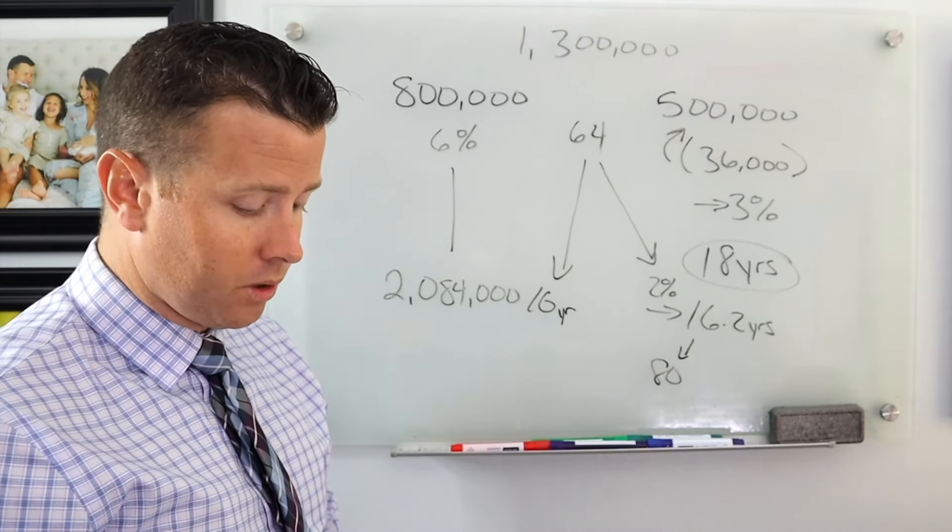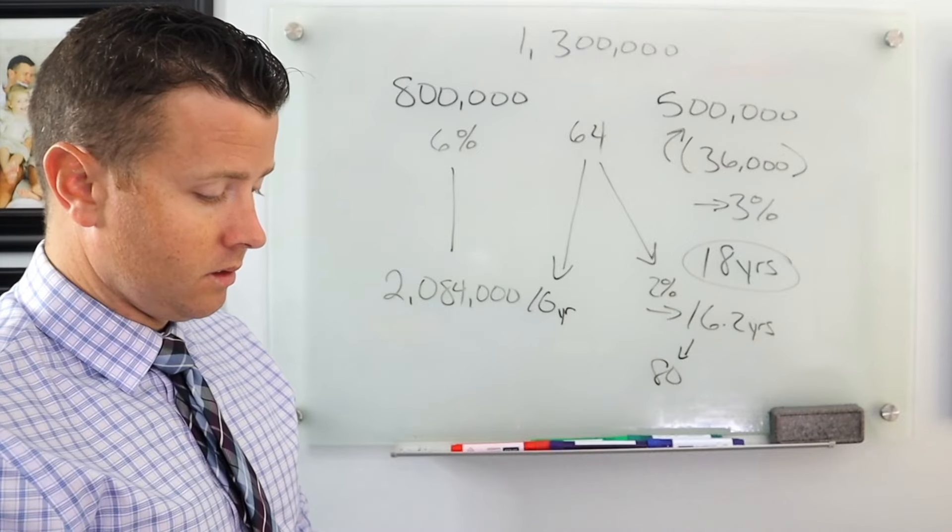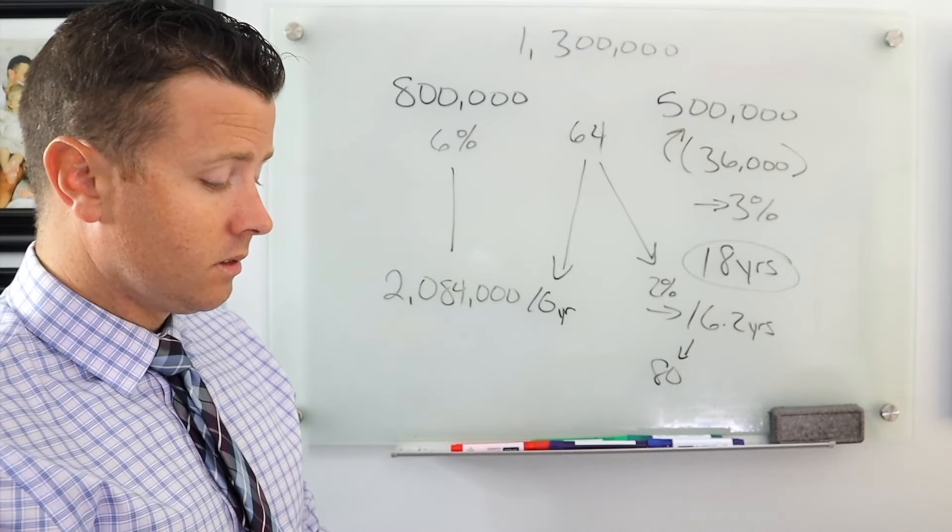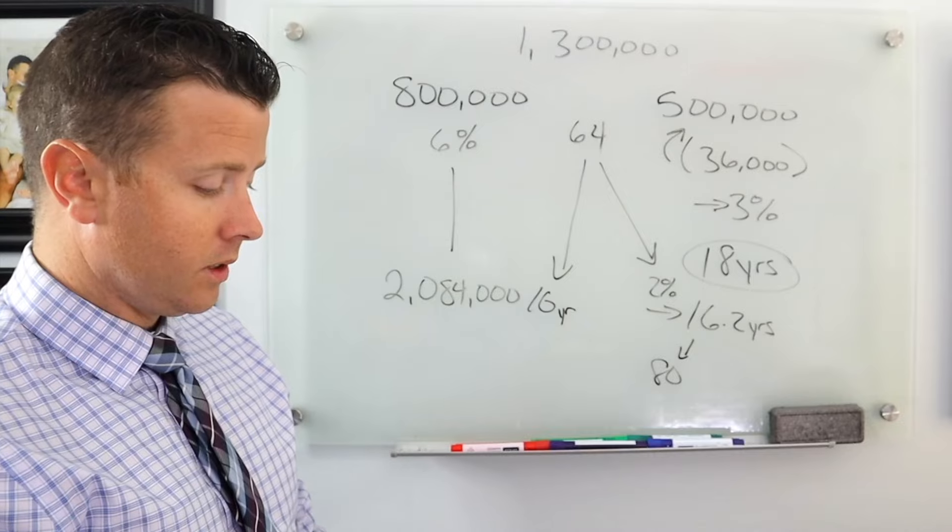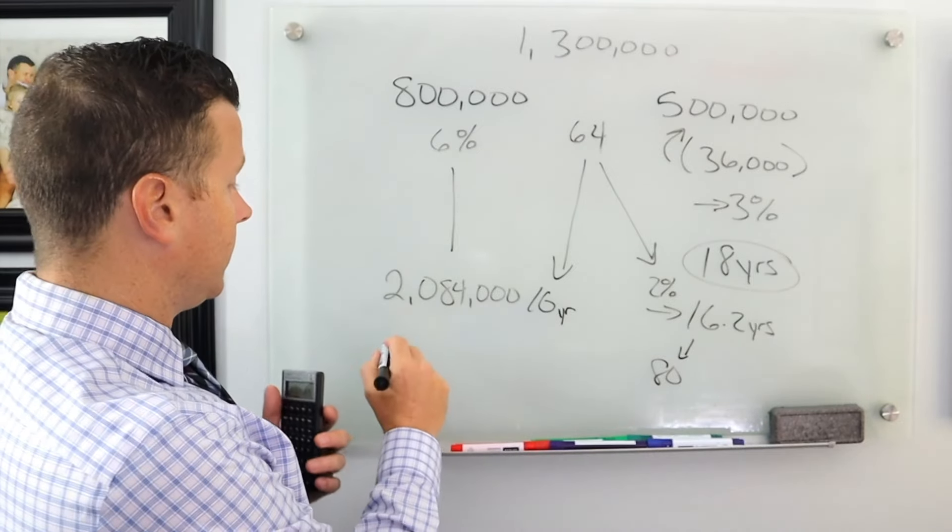Now let's say we just earned 4% a year. 4% a year, let's go $800,000, 4%, 16 years. That actually goes to $1,500,000.